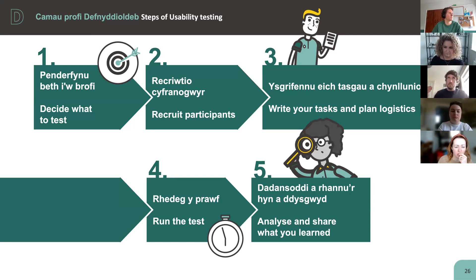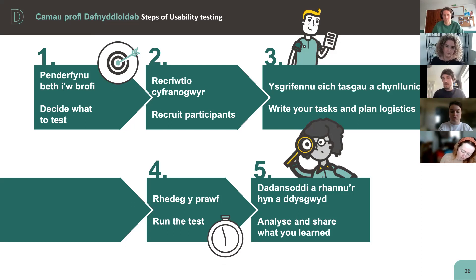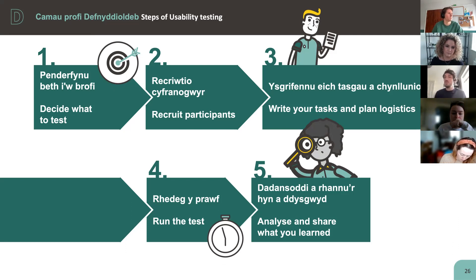Usability testing follows a fairly linear planning and running process with about five steps. Step one: deciding what to test. Step two: recruit participants. Step three: write your tasks and plan the logistical elements. Step four: run the testing. Step five: analyze and share. In an ideal world, once you have analysis you can use to make improvements, you go back to step one and test again — it is a continual cycle to make sure your service continues to meet user needs as they change over time.